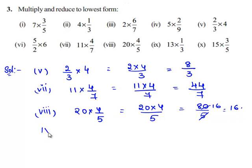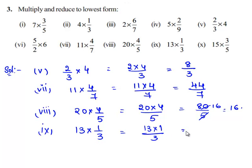Let us move on to the ninth bit: 13 times 1 by 3. We shall multiply the numerators and denominators respectively. So 13 times 1 divided by 3 gives 13 by 3. Since 13 and 3 do not have a factor in common, the lowest form of the fraction is 13 by 3 itself.